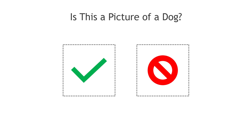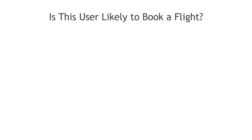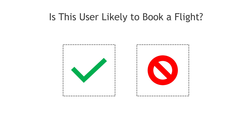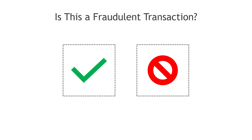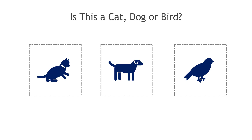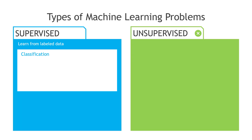So say you're asking the question: is this a picture of a dog? Your answer is going to be yes or no. Is this user likely to book a flight? Yes or no. Is this a fraudulent transaction? Yes or no. Is this a cat, dog, or bird? So three choices in this case, rather than just two. And these examples illustrate supervised learning problems.